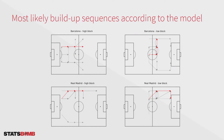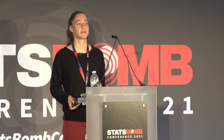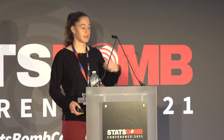Once we have those models we can start the analysis. The first thing we can do is look at the most likely buildup sequences according to the model. For Barcelona, under both a high block and a low block, we see they tend to go through the center first then move to the sides, preferably the left — often Piqué passing to Busquets passing to Frenkie de Jong. For Real Madrid we see something different: they prefer moving through the left side first. You can create these analyses for any team, but we'd like to go beyond this and look at how to optimally disrupt their buildups.